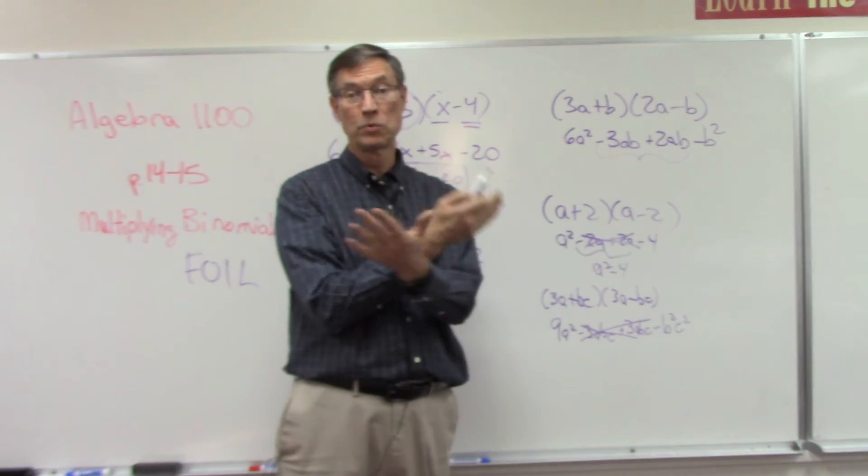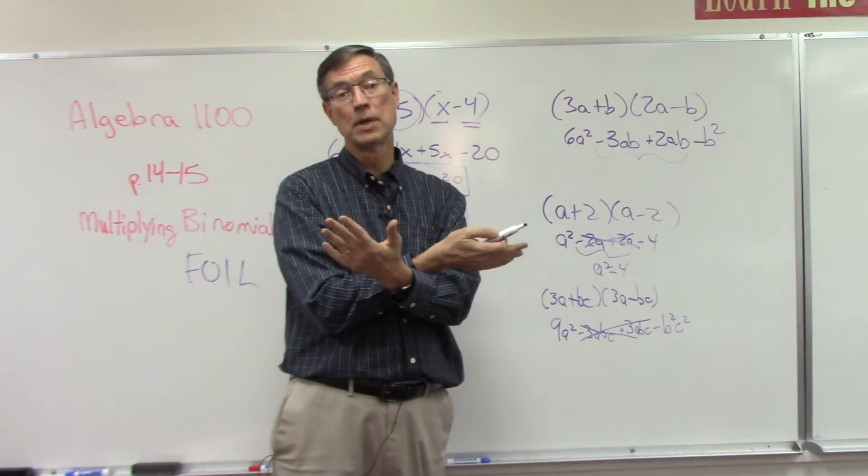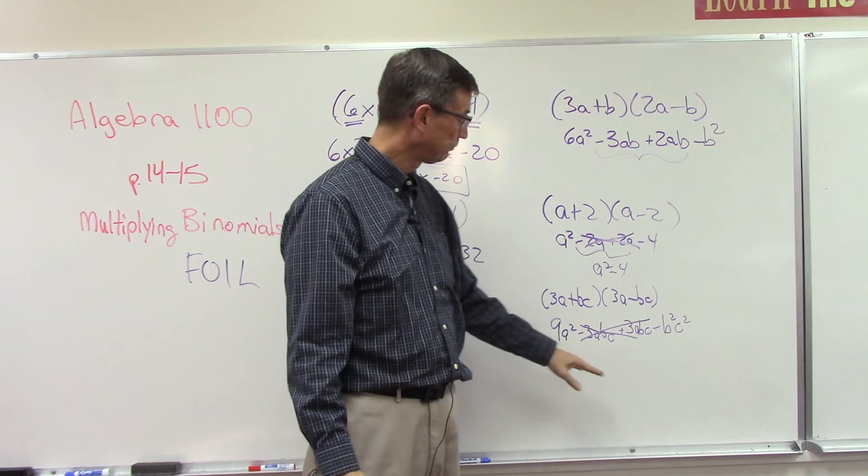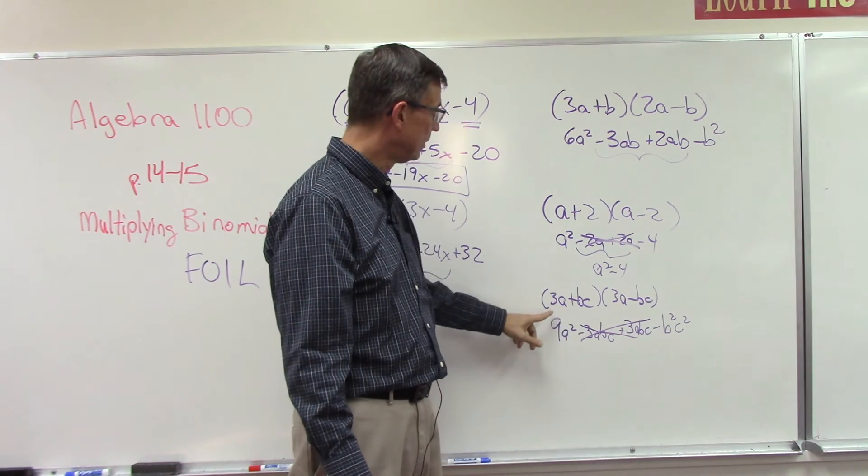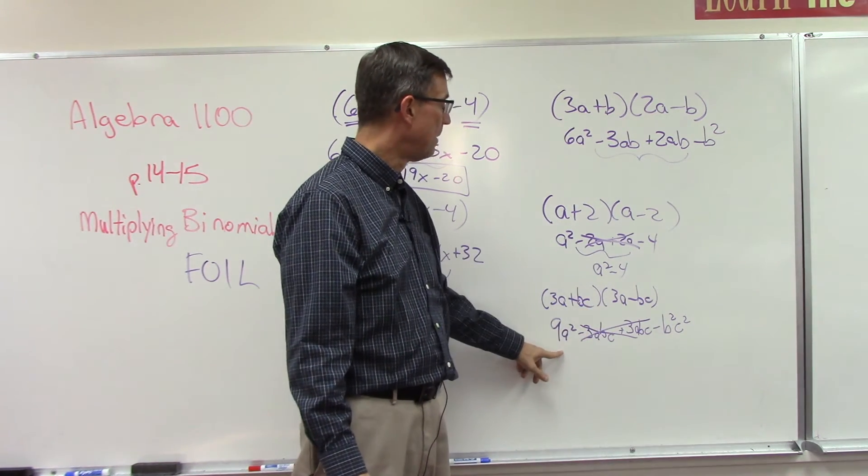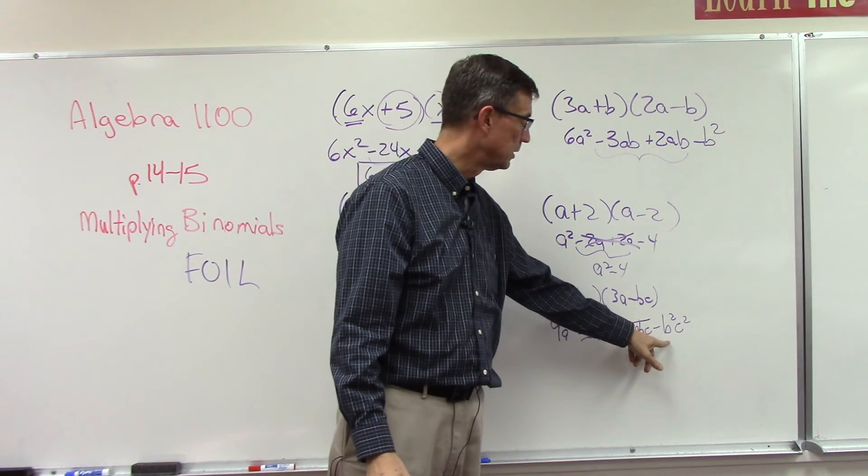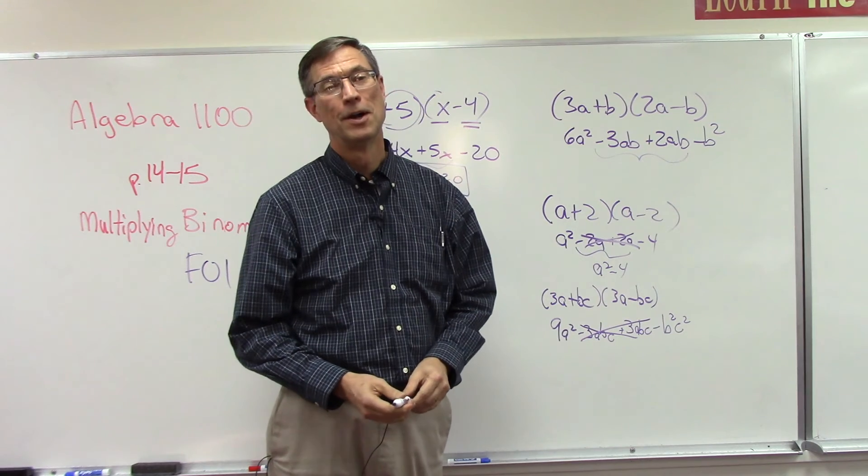So when the terms are exactly the same except that one's positive and one's negative, and it doesn't matter which, one could be the negative first, the positive second, doesn't matter, the middle term is always going to cancel out. And you'll just end up with the first term minus, it's always going to be minus because you have positive times a negative, minus the second term squared.